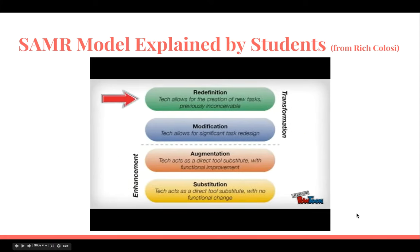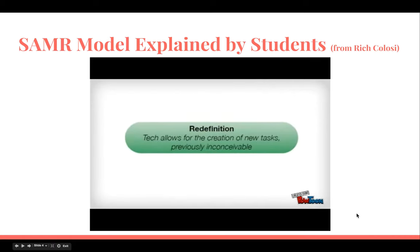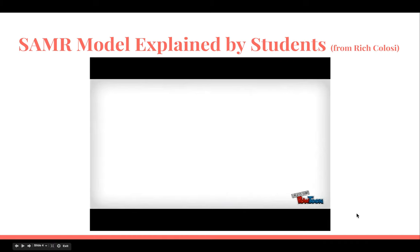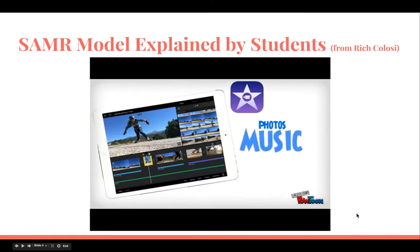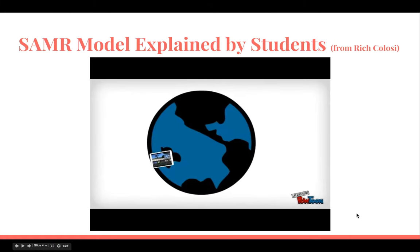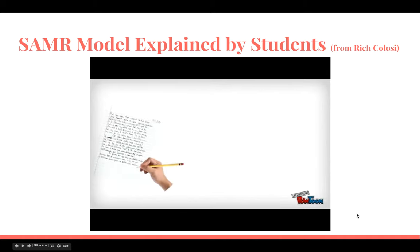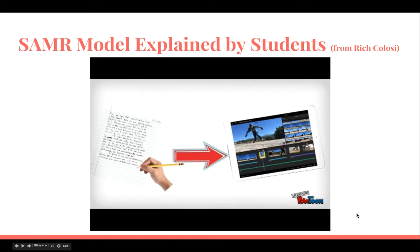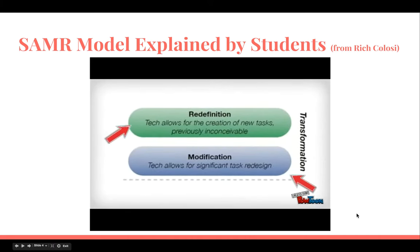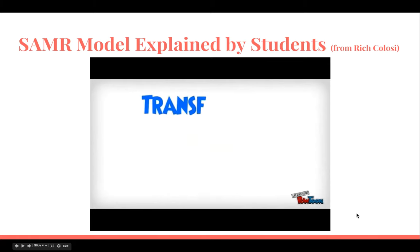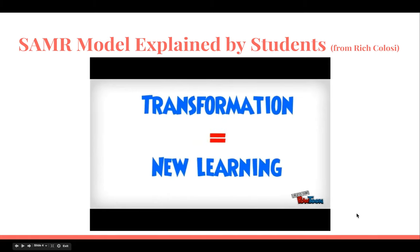The final level and the ultimate goal of technology integration is redefinition. Here, the technology allows for the creation of new tasks that were previously inconceivable. Instead of writing that essay, students could create and publish a digital storytelling project to argue their writing with multimedia. Just like the blog, publishing this movie to the world allows others to comment and analyze their message. The heart of the assignment is still the same, but the technology allows students to engage in a new, more involved task that's otherwise not possible. At these levels, learning is transformed through the use of technology. When we are more engaged and involved, significant improvements in learning are more likely to take place.